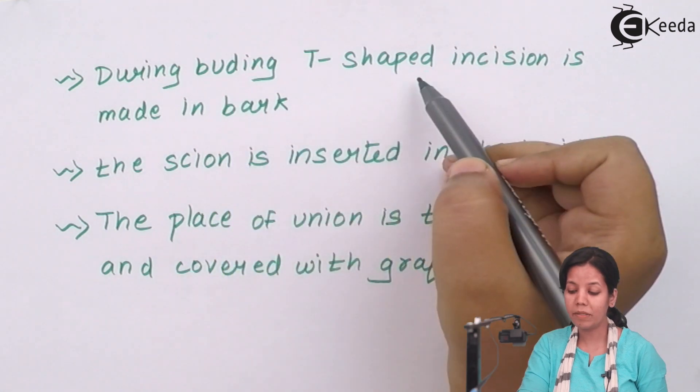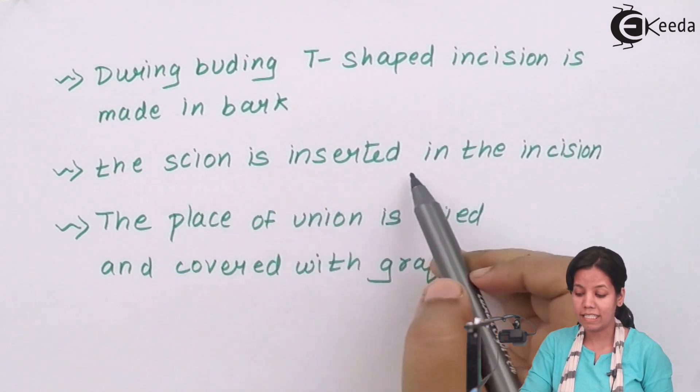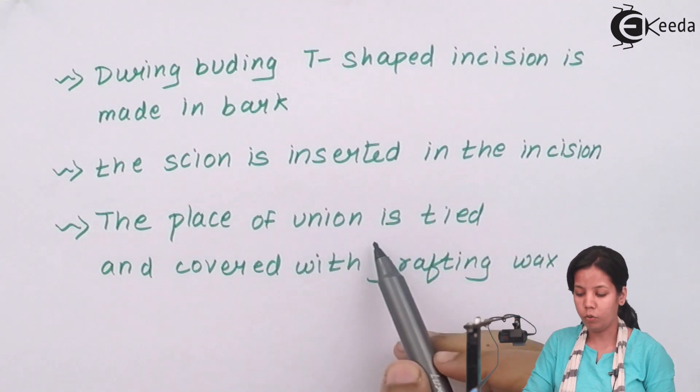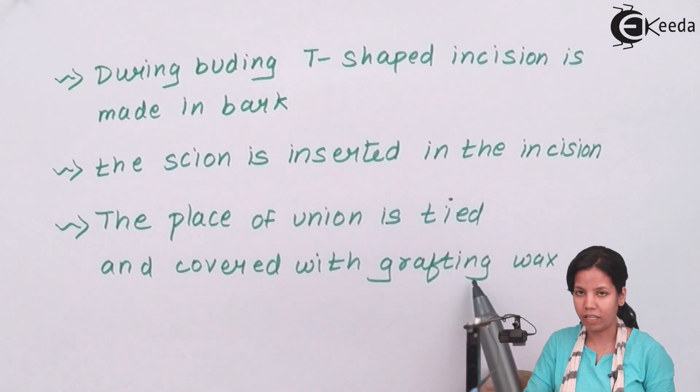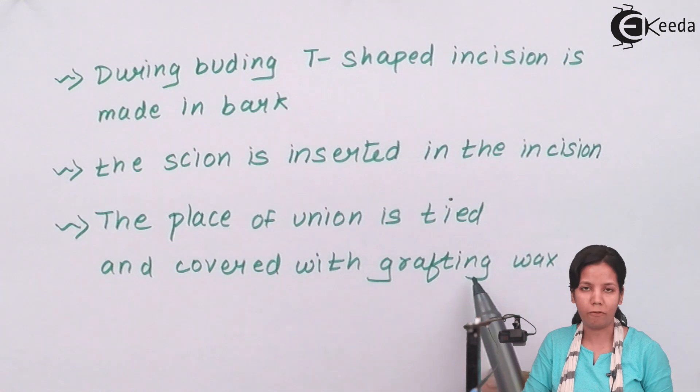During budding, a T-shaped incision or cut is made into the bark. The scion is inserted into this incision. The place of union is tied and covered with grafting wax and after this, the plant is actually grafted.